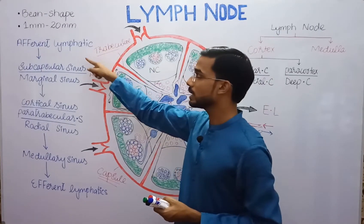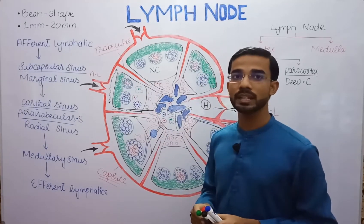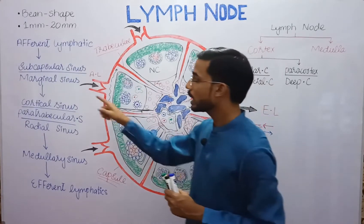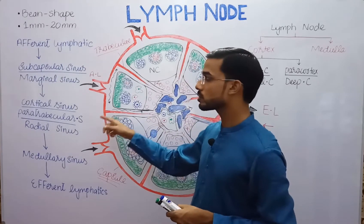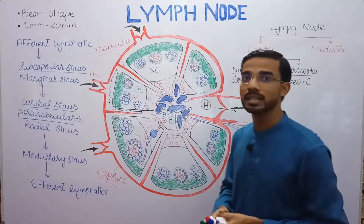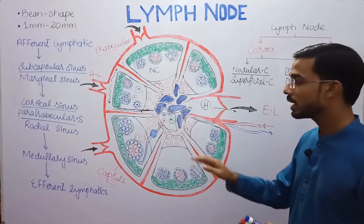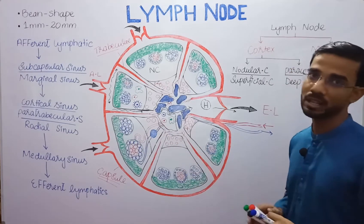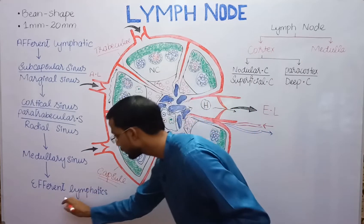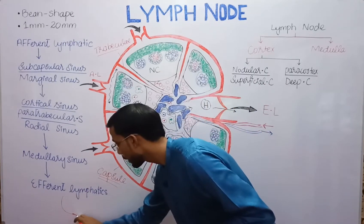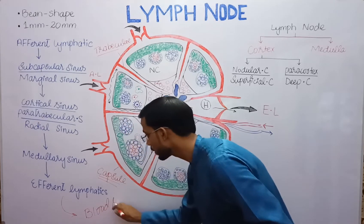To summarize lymph flow: afferent lymphatic vessel → subcapsular sinus or marginal sinus → cortical sinus (paratrabecular or radial sinus) → medullary sinus → efferent lymphatic vessel → ultimately drains into the bloodstream.